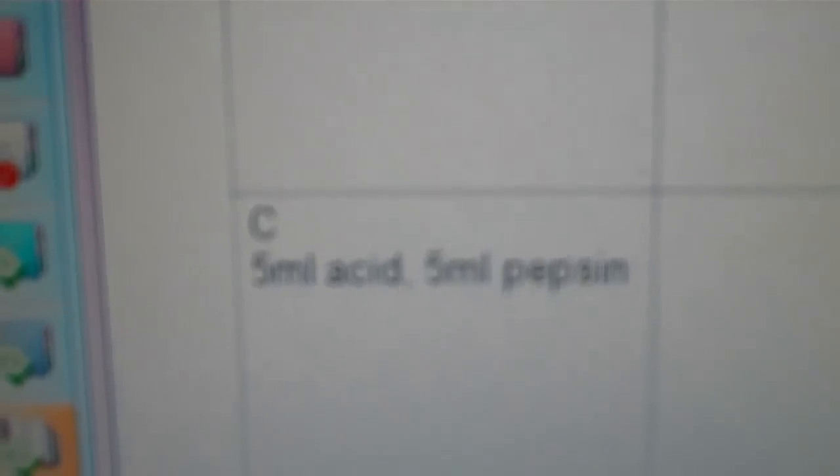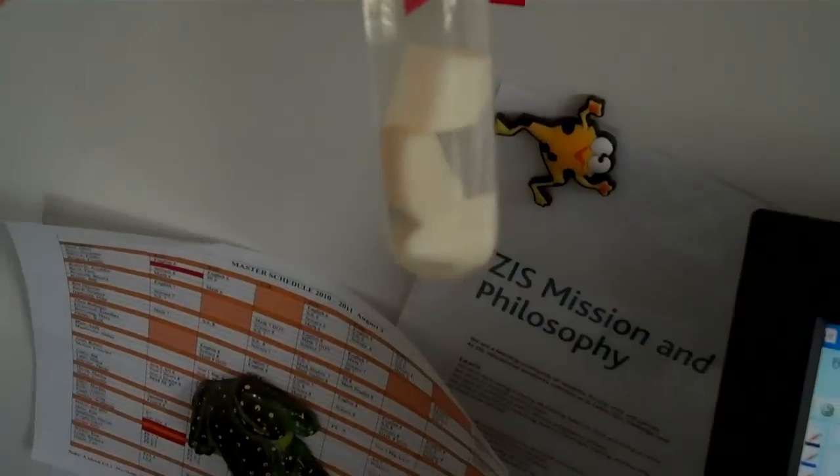And test tube C, we're going to have five mils of the hydrochloric acid found in the stomach, and five mils of pepsin, the enzyme pepsin, plus the three pieces of egg. And the enzyme pepsin is the enzyme that digests protein. So we're going to leave these pieces of egg white.